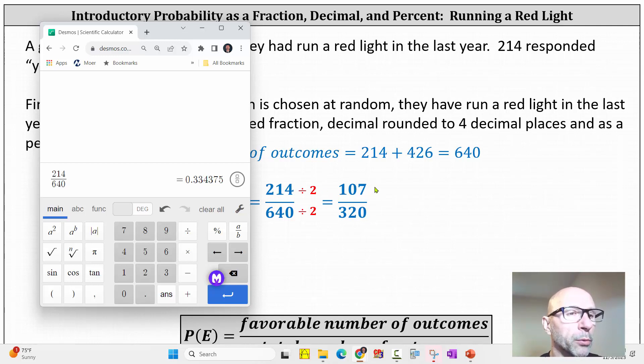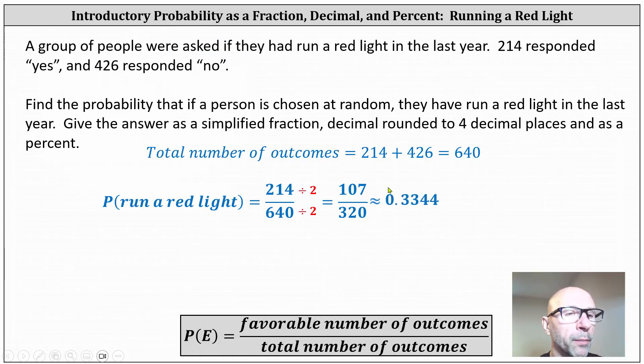To convert a decimal to a percent, we multiply by 100 and add a percent sign, which gives us 33.44%.